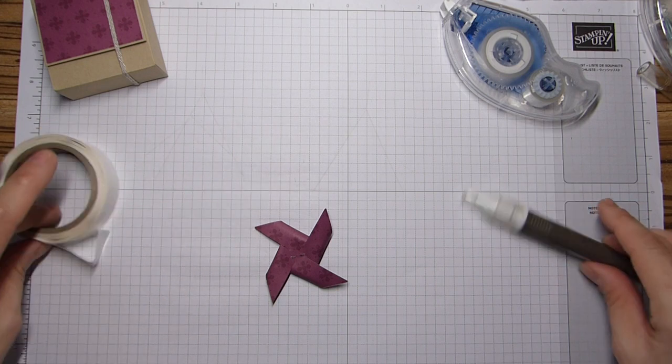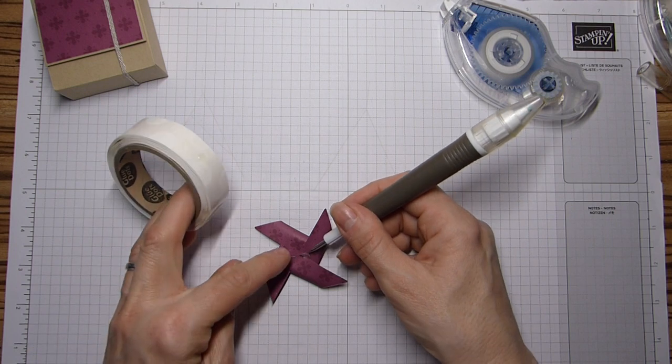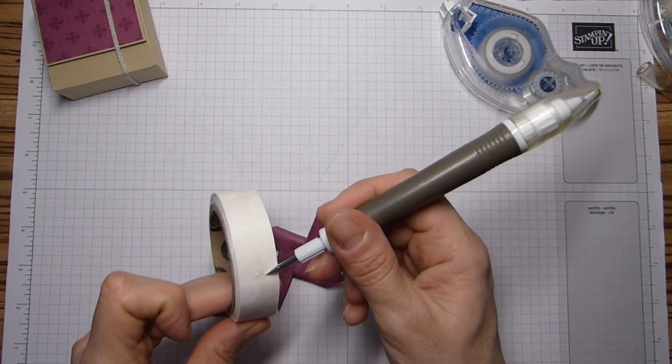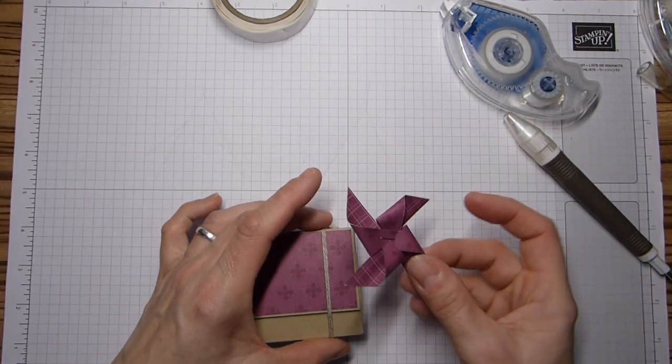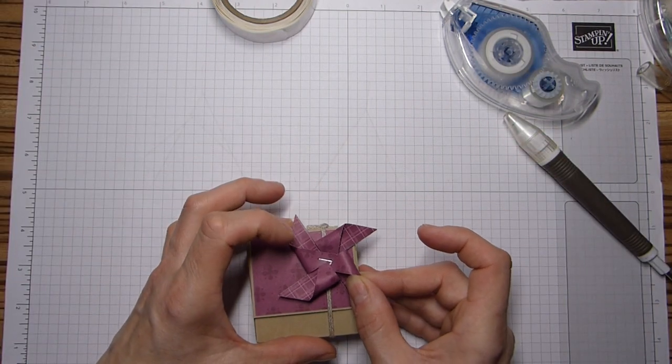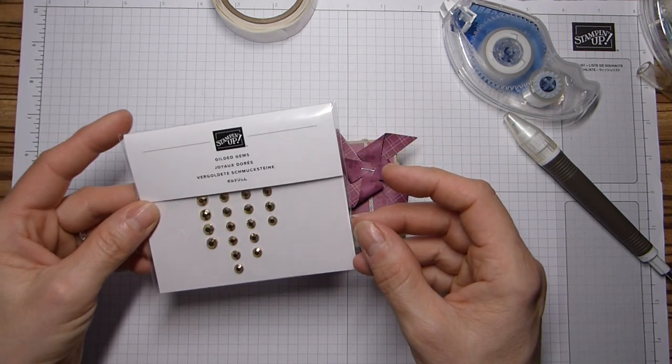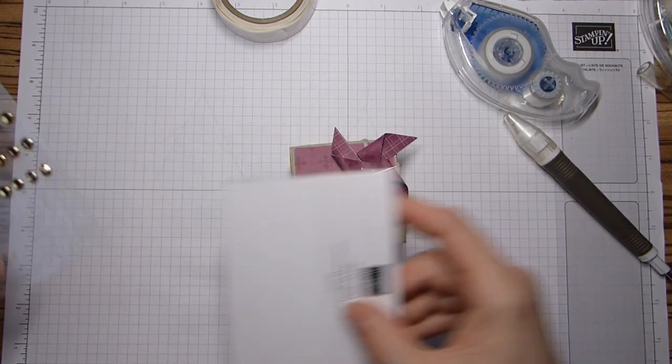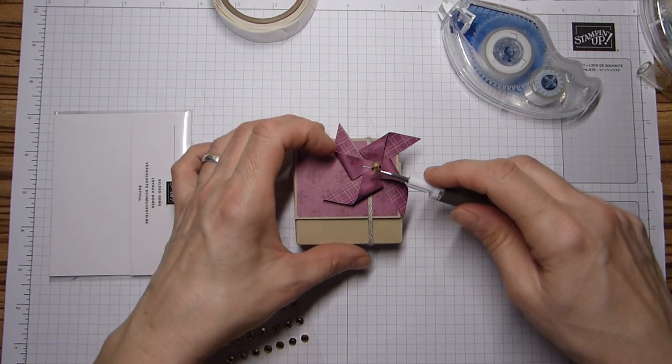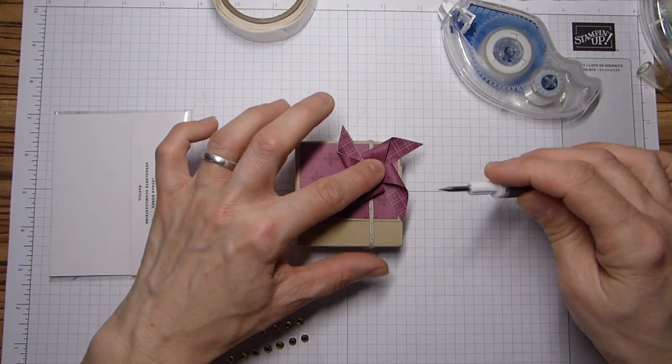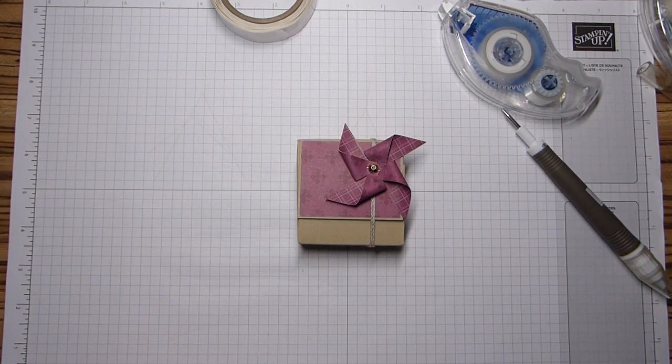So, I'm going to add a couple more dimensionals to the back. And then I'm going to stick this over the ribbon. And then Gilded Gems, one of the large ones here. It just about covers the staple. Not completely, but enough.